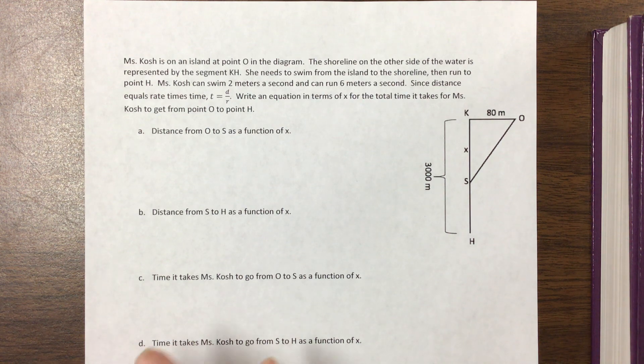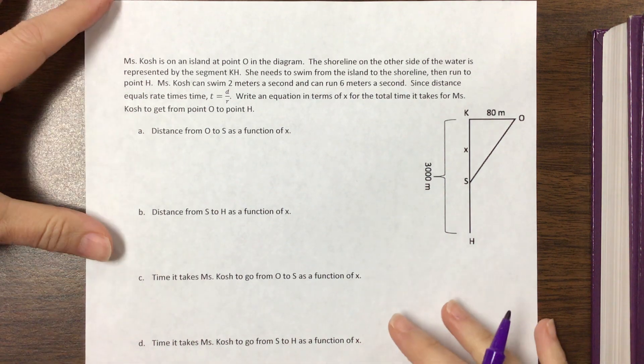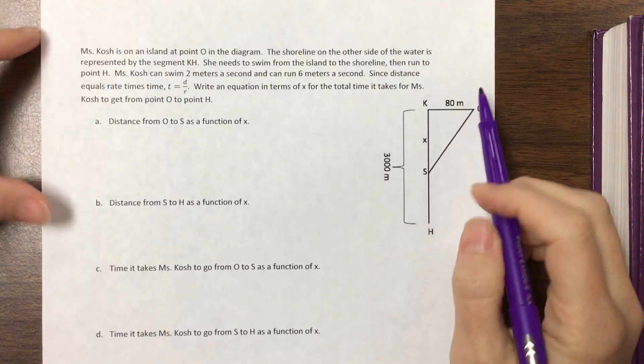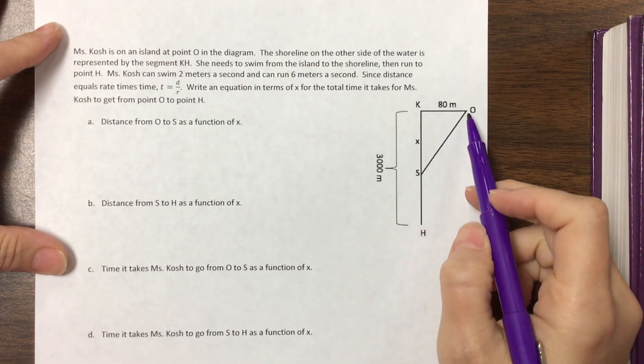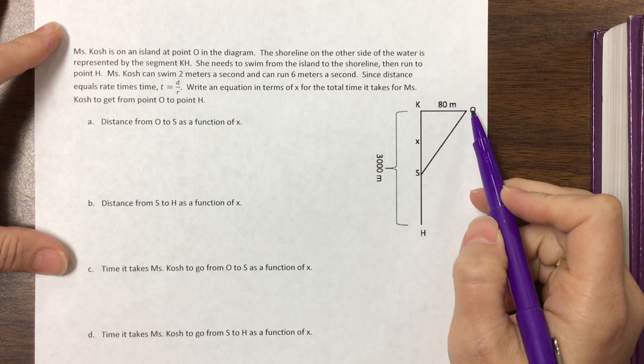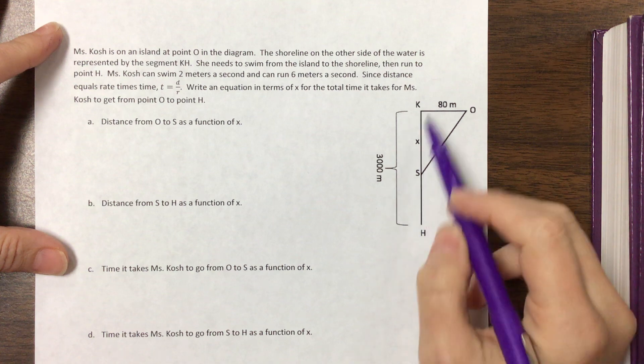I'm gonna work one of the problems off of the review sheet and this one is about me. Okay so here they're saying that I'm on an island at point O. So here's this island and the shoreline on the other side of the water is represented by this segment here. So this KH.